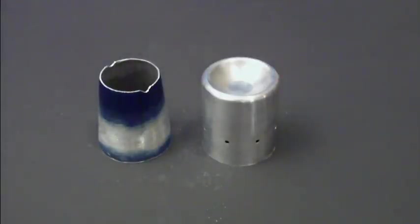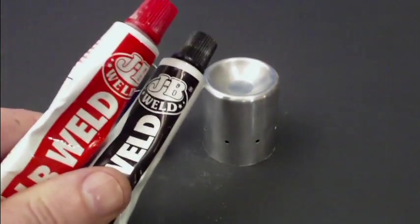Now that both of your pieces are finally prepped and ready to go, it's time to put them together. And for that, you're going to need some good old JB Weld.